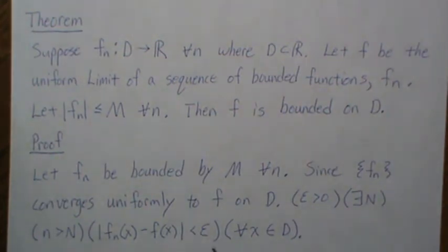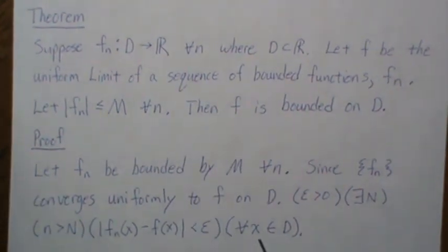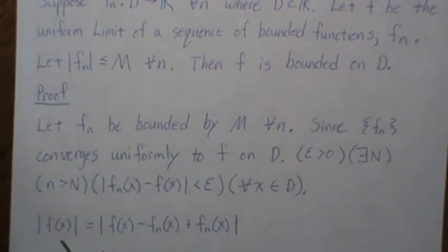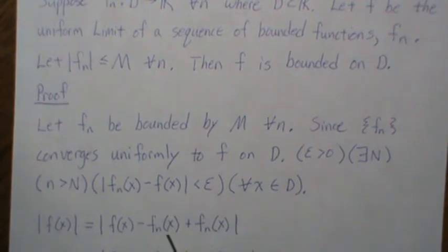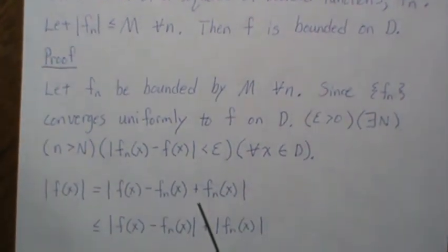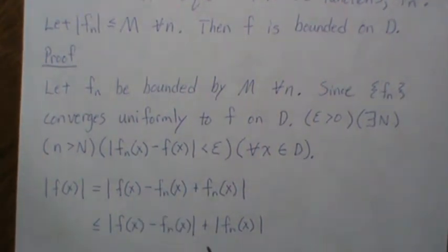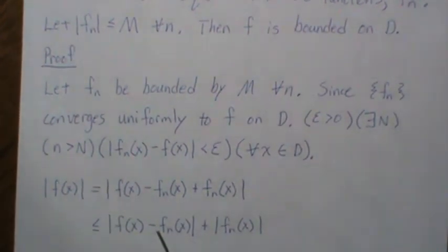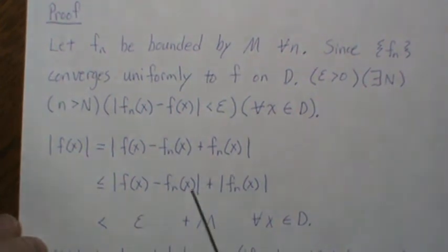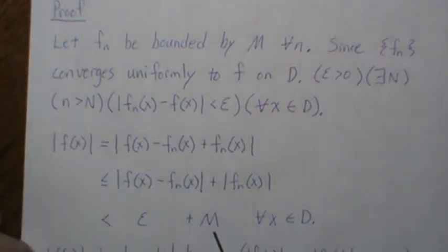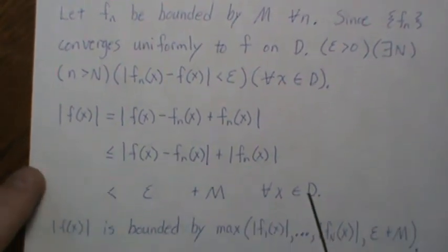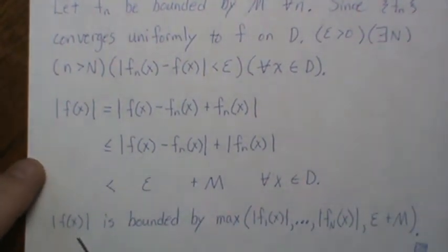If we look at f(x) and add zero, add and subtract the same quantity, it doesn't change it. By the triangle inequality, this is less than this. But we know that this is bounded, and then for some n greater than N, this is less than epsilon. So these two functions are bounded by epsilon plus M for all x in D.